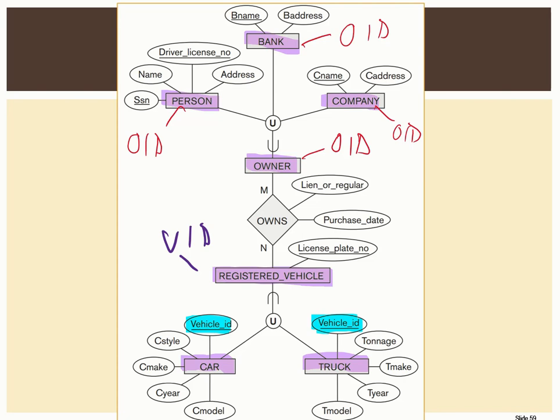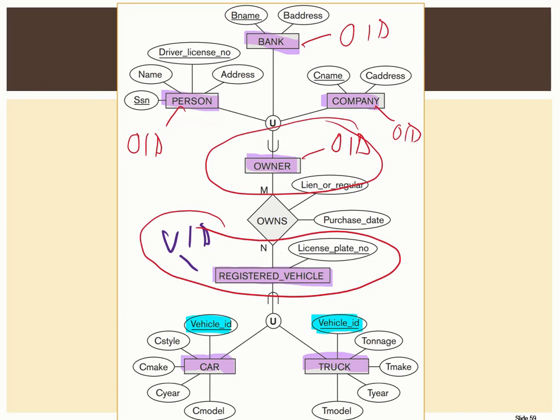It may seem strange that when you model the owner entity type in the database, it may only have one field — the owner ID. The registered vehicle at least has two fields: the vehicle ID and the license plate number. But the owner table, the subclass table, is the table that's in a relationship with registered vehicles. In order to preserve that, we need a table just for owner even if all it has is the owner ID. This is how you model union data types. You don't come across these as often as other forms of EER diagramming, but it's important to know the difference and how to interpret an EER diagram with a union.